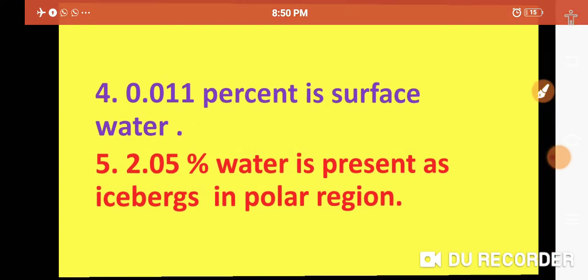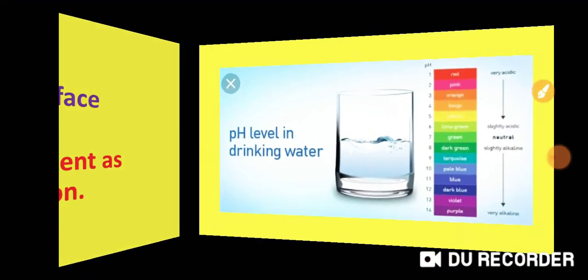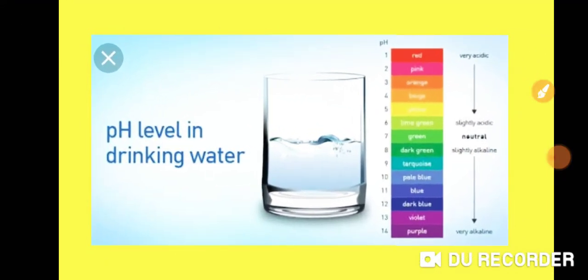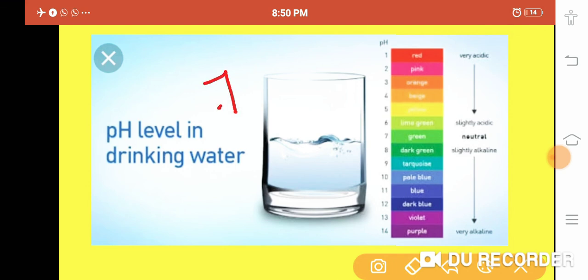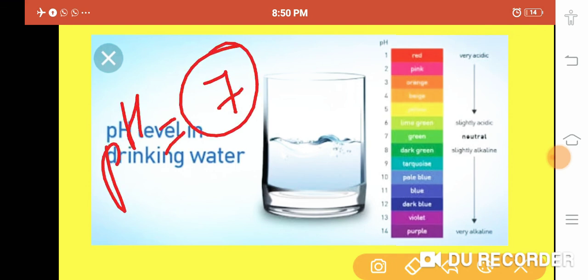Potable water is pure water with a pH value of 7. For potable water, the pH value should be 7.